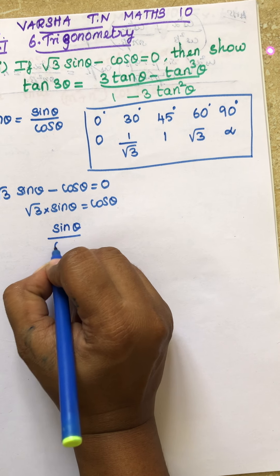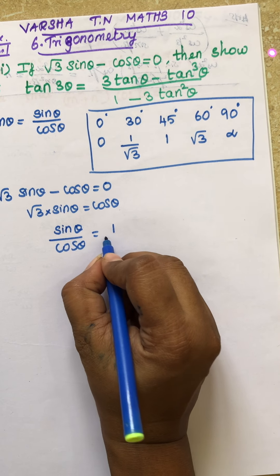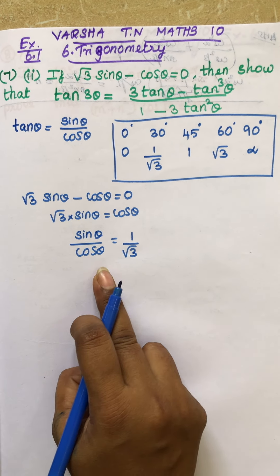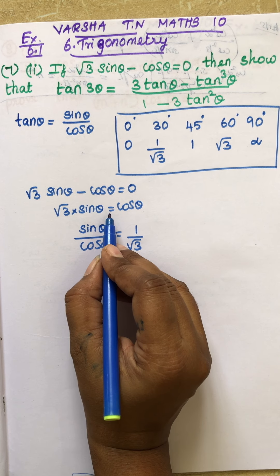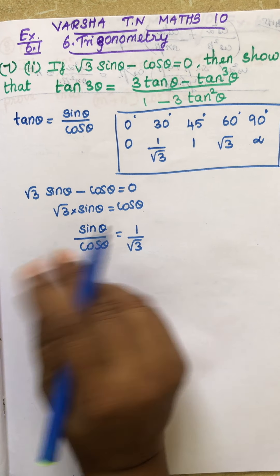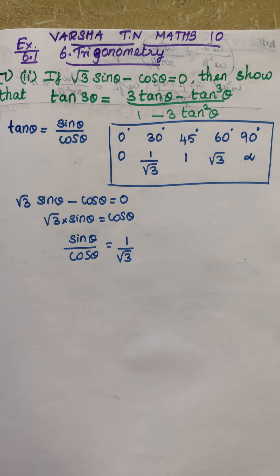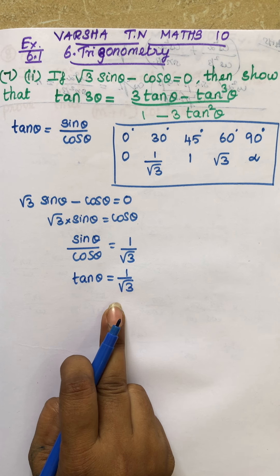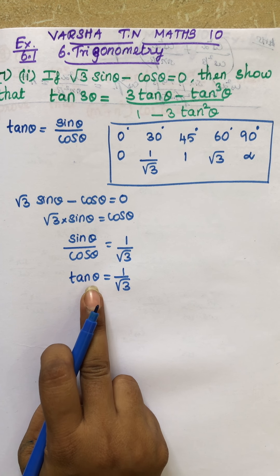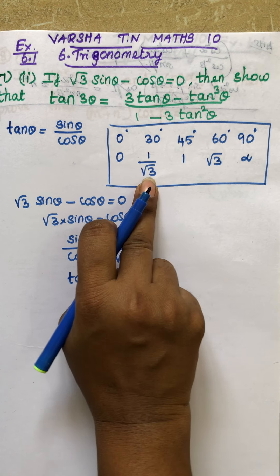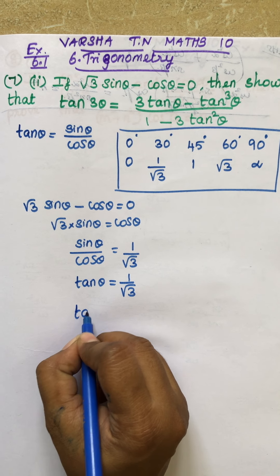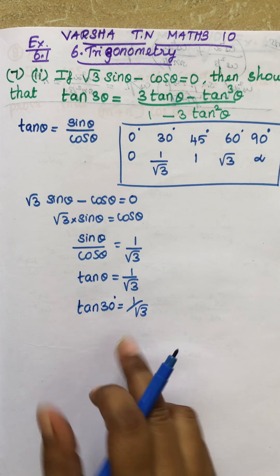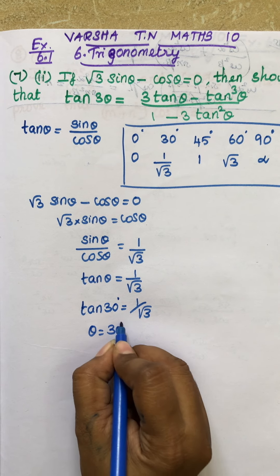So sin θ divided by cos θ gives us tan θ. Therefore tan θ equals 1 divided by √3. From our table, we know that tan 30° equals 1/√3, so the value of θ is 30 degrees.